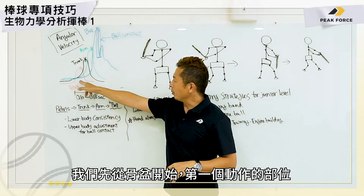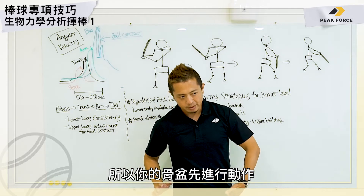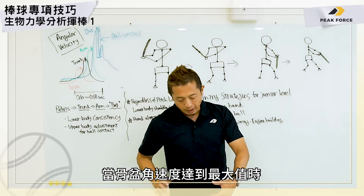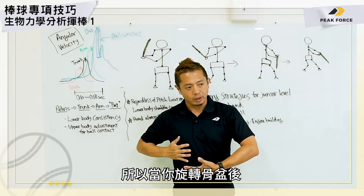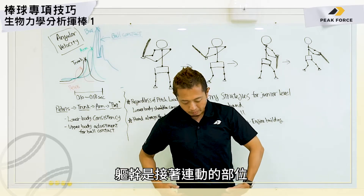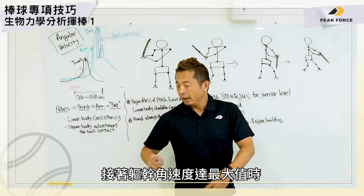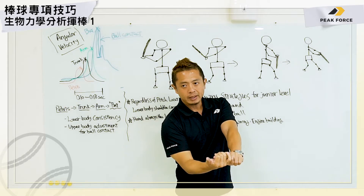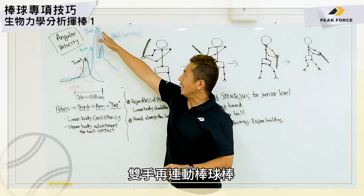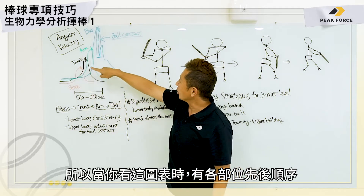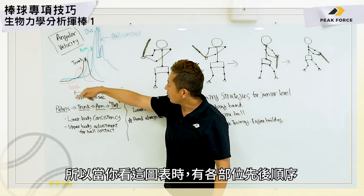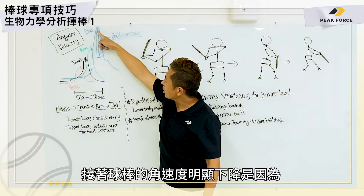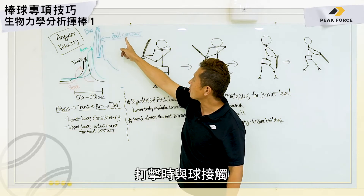Looking at the pelvis — that's the first movement. Your pelvis moves first, and then as soon as your pelvis reaches peak angular velocity, the trunk comes in. After you twist your pelvis, here comes the trunk. And then after the trunk, your hand comes in. And then after your hand, it gets to the baseball bat. So the sequence is: pelvis, trunk, arm, and then the baseball bat. The angular velocity of the baseball bat drops significantly at ball contact.